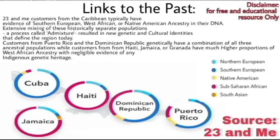Extensive mixing of these historically separate populations — a process called admixture — resulted in new genetic and cultural identities that define the region today. Customers from Puerto Rico and the Dominican Republic genetically have a combination of all three ancestral populations, while customers from Haiti, Jamaica, or Grenada have much higher proportions of West African ancestry with negligible evidence of any indigenous genetic heritage. This is due to their demographic history being different from Puerto Rico, the Dominican Republic, and Cuba, which are all former Spanish colonies. That is why those three islands have a substantial amount of all three ancestries: the Native American, the European, and the African.